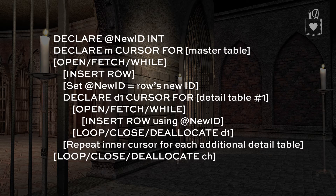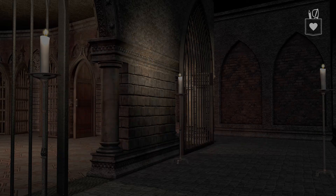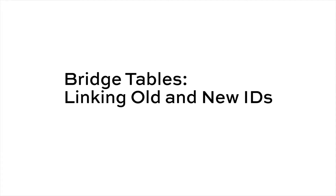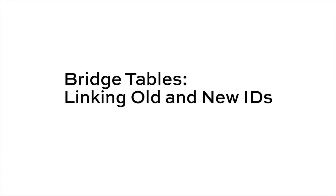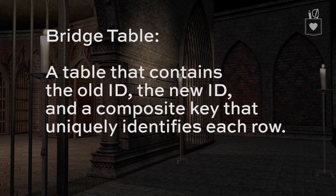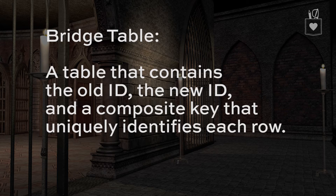There's a way that we can do this using set-based operations. In order to do that, we're going to need what is known as a bridge table. A bridge table is simply a table that contains the old ID, the new ID, and a composite key that uniquely identifies each row. That key is made up of one or more columns in the table data.